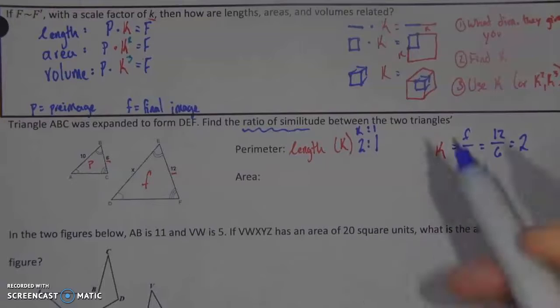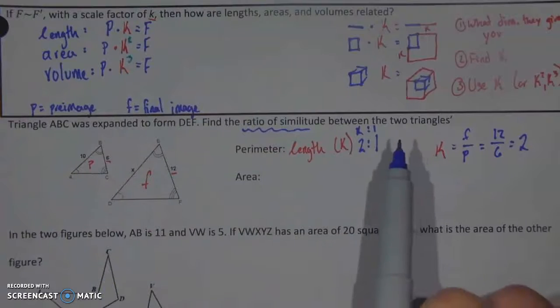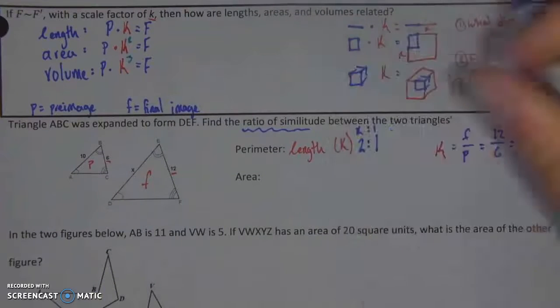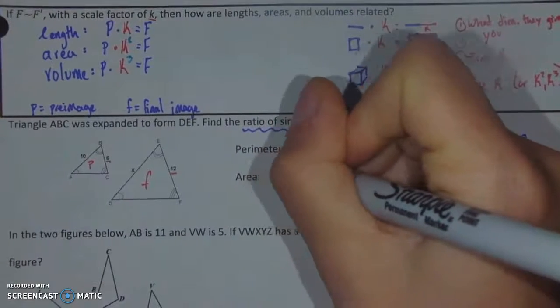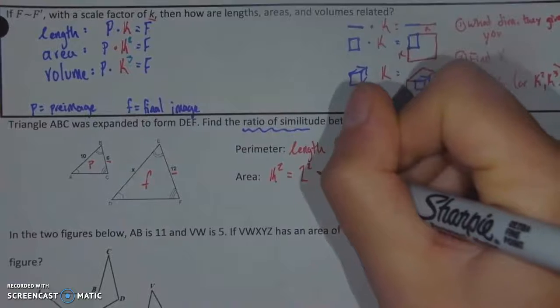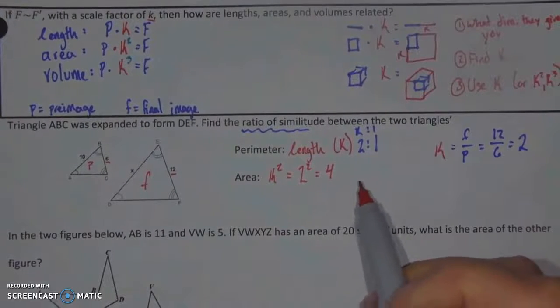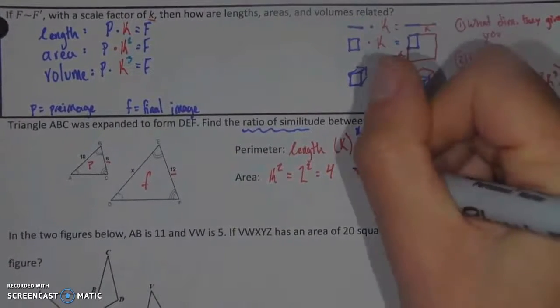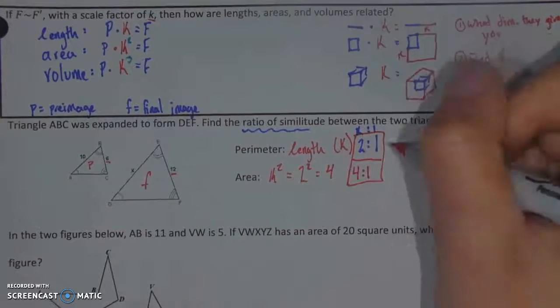With area all I need to do is, well, if I'm looking at area what I'm doing is I'm going to square my k and here with a ratio what you're going to do is you're going to take that normal k and square it. So, k squared will be my area which is 2 squared or 4 and if I want to write that as a ratio of similitude all I need to do is set it as 4 to 1. So, these are our two answers then.